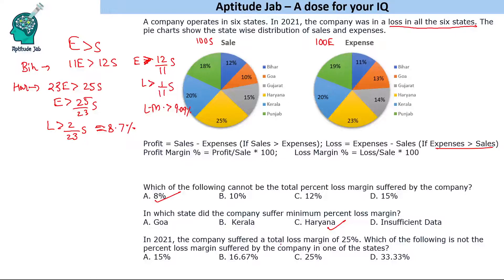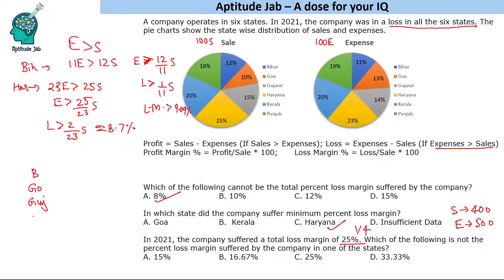The third question: in 2021 the company suffered a total loss margin of 25 percent — which of the following is not the percent loss margin in one of the states? A 25% loss margin means loss is one-fourth of sales, so if sales = 400 then expense = 500. We build a table for all six states: Bihar, Goa, Gujarat, Haryana, Kerala, and Punjab, with total sales of 400 and total expenses of 500.